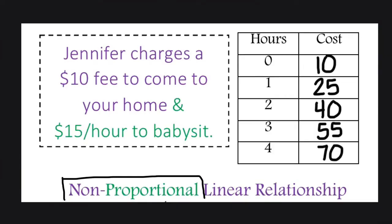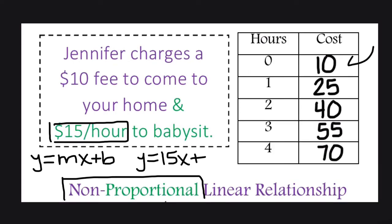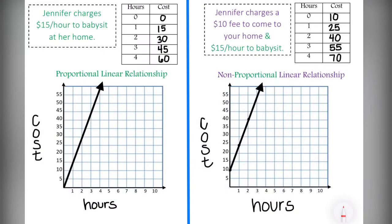Now, a non-proportional situation, we're still going to use y equals mx plus b, slope-intercept form. We're also going to find the rate, which in this case is still $15 an hour. That is m, or your slope. The difference here is b, the y-intercept, the starting point. Remember, Jennifer charges that $10 fee just to start. So, this is y equals 15x plus 10, making it non-proportional.